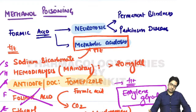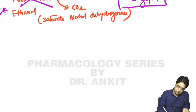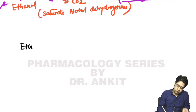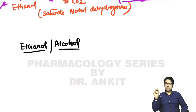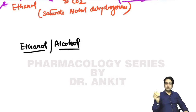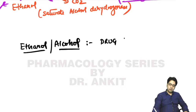Ethanol is also known as the one and only alcohol. Ethanol is the second most commonly abused substance after tobacco, and ethanol shows drug addiction - the person becomes addictive to ethanol or alcohol.